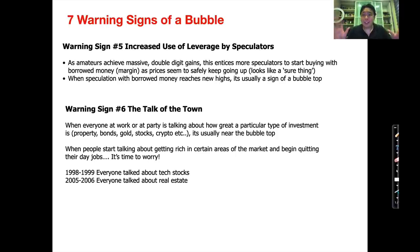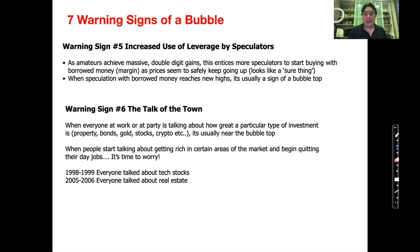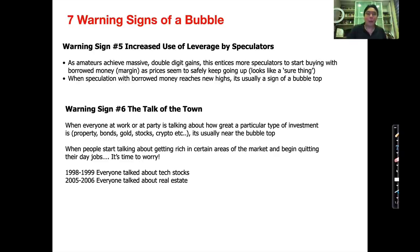Warning sign number six: everyone seems to be talking about it. At the workplace, at parties, people say you've got to buy this, you've got to get into this investment, and people start to think this is so easy — I could quit my day job and do this full-time. That's a sign of a bubble. Back in '98 and '99, every party I went to everyone was talking about dot-com stocks — it's the future, the way to get rich. In 2005 and 2006, it was all about real estate speculation: no money down, you can buy a property, flip it, make so much money, why work anymore? You even saw books writing about it. That's a sign of a bubble.